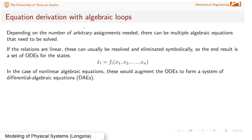In equation derivation with algebraic loops, depending on the number of arbitrary assignments, there may be multiple algebraic equations that we'll have to solve. If the relations are linear - and remember, those algebraic relations usually result through the constitutive relations of the R elements - then sometimes you can solve for the variables, maybe as one algebraic equation or even multiple algebraic equations, and eliminate them symbolically, so at the end of the day you can write a set of nice first-order equations.